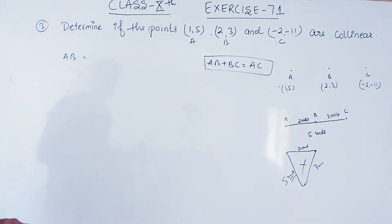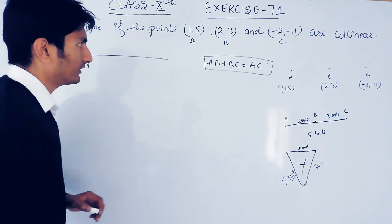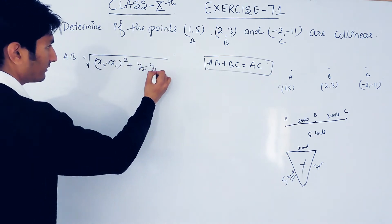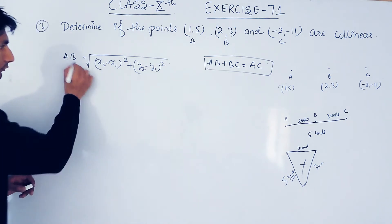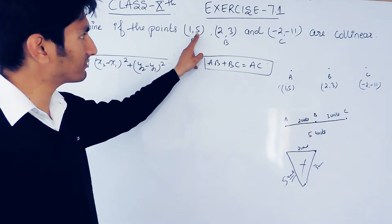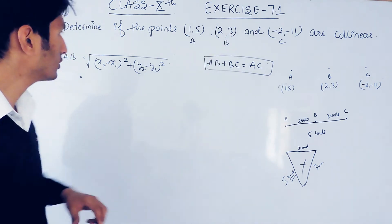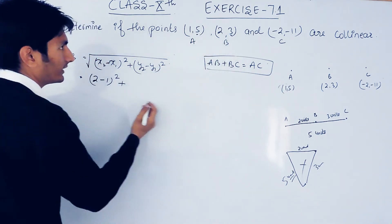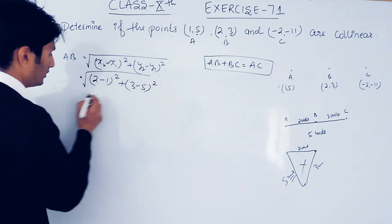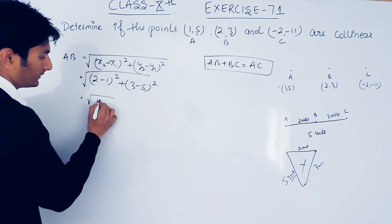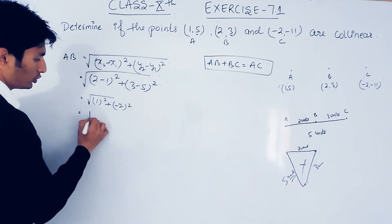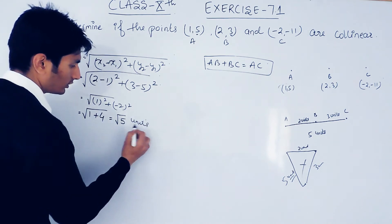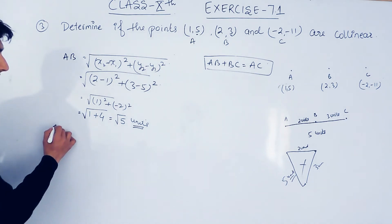To find the distance between AB, we use the distance formula: √((x2−x1)² + (y2−y1)²). For AB, x1=1, y1=5, x2=2, y2=3. Substituting: √((2−1)² + (3−5)²) = √(1 + 4) = √5 units. So the distance between AB is √5 units.